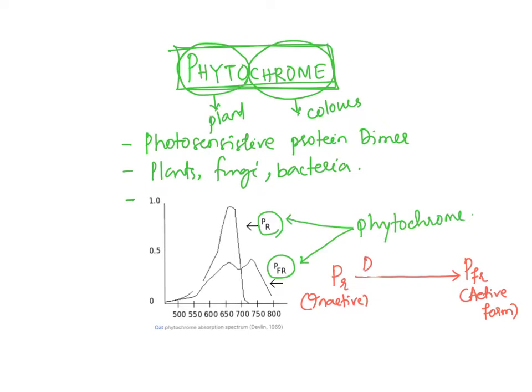During daytime, by receiving red wavelength light, PR is converted to its active form PFR. The red light zone absorption peak is about 670 nanometers, at which phytochrome shows maximum reactivity.